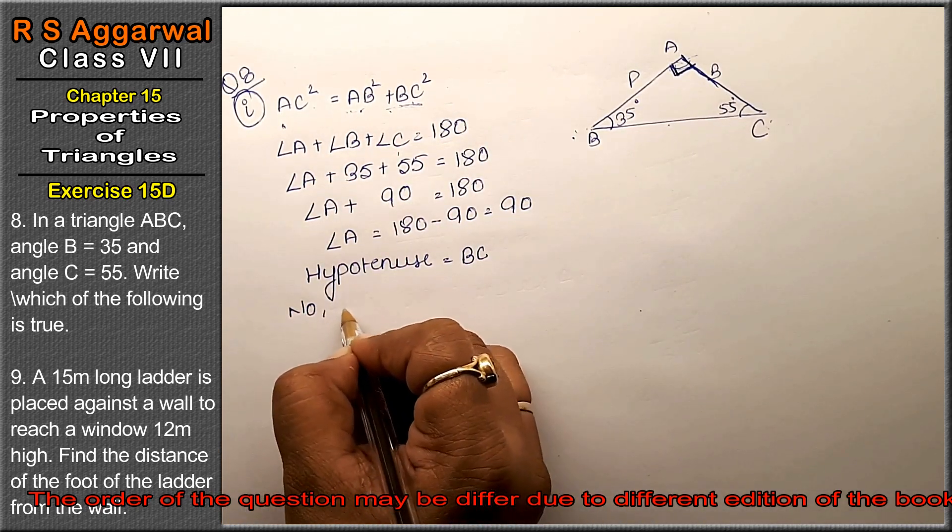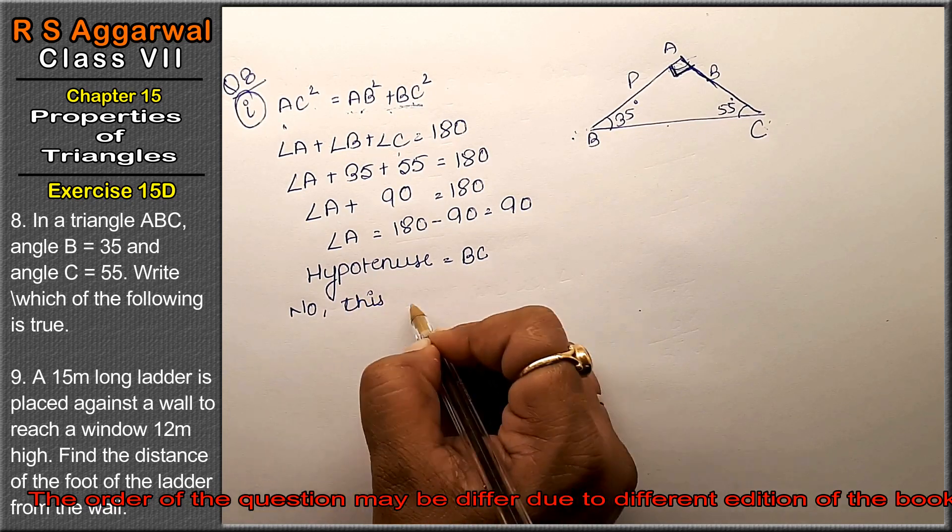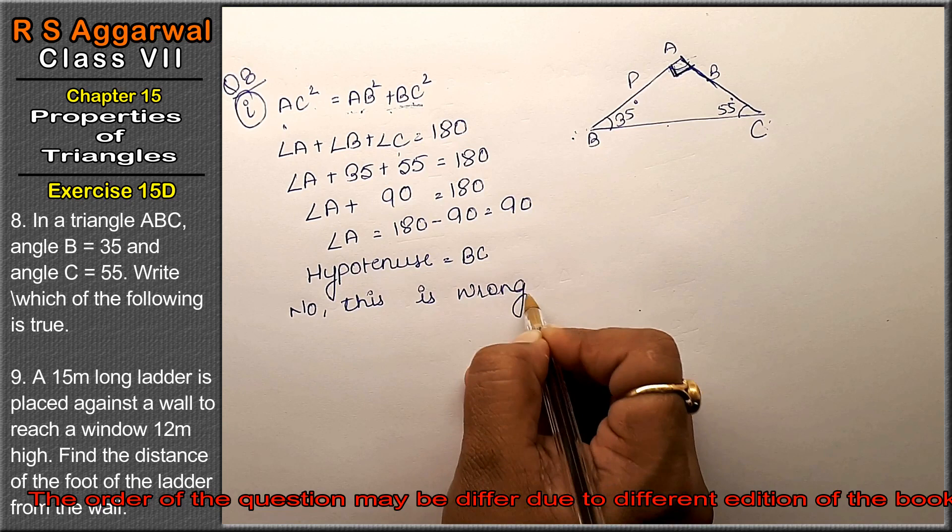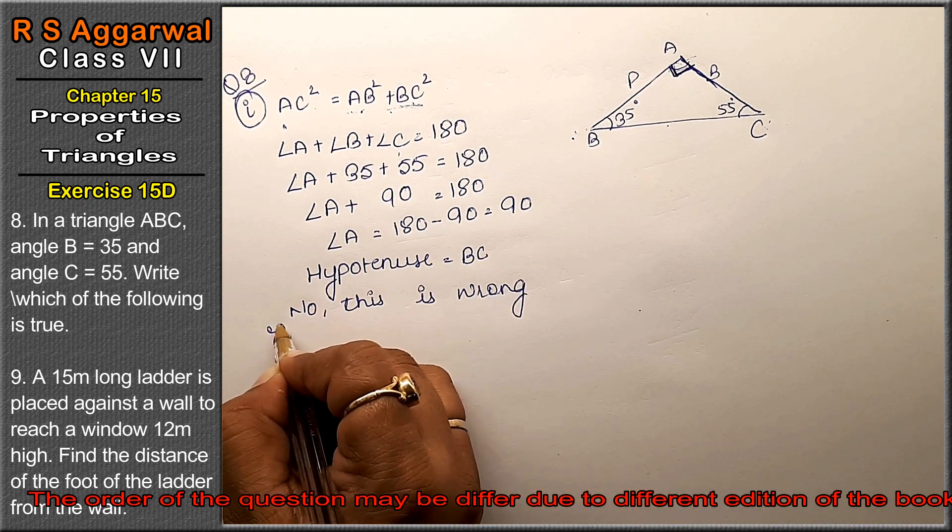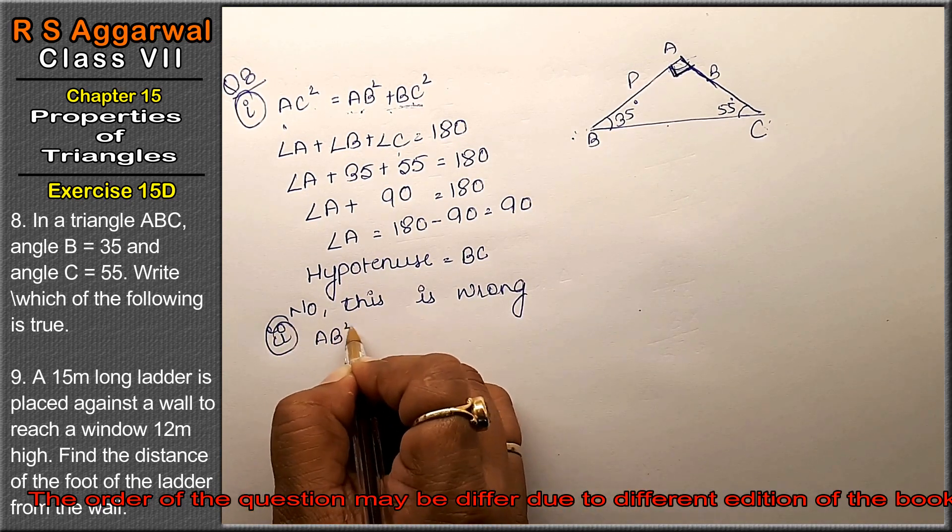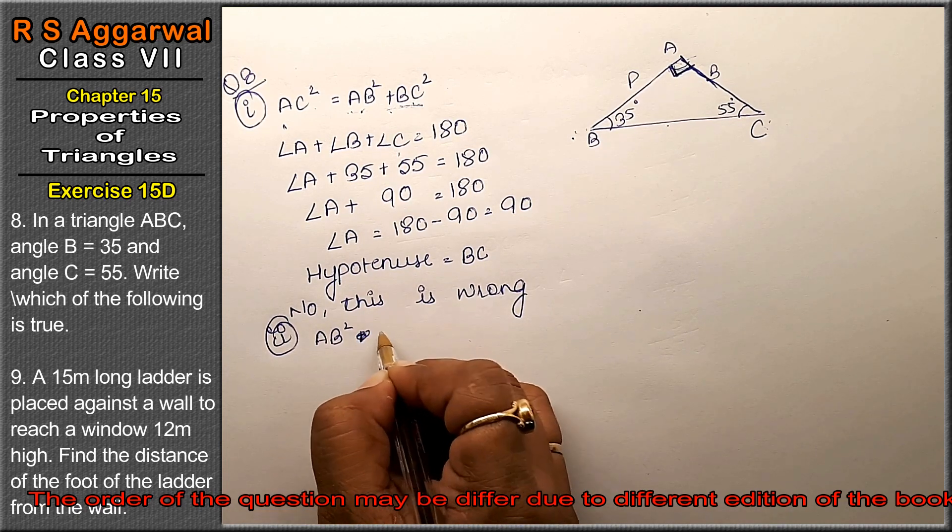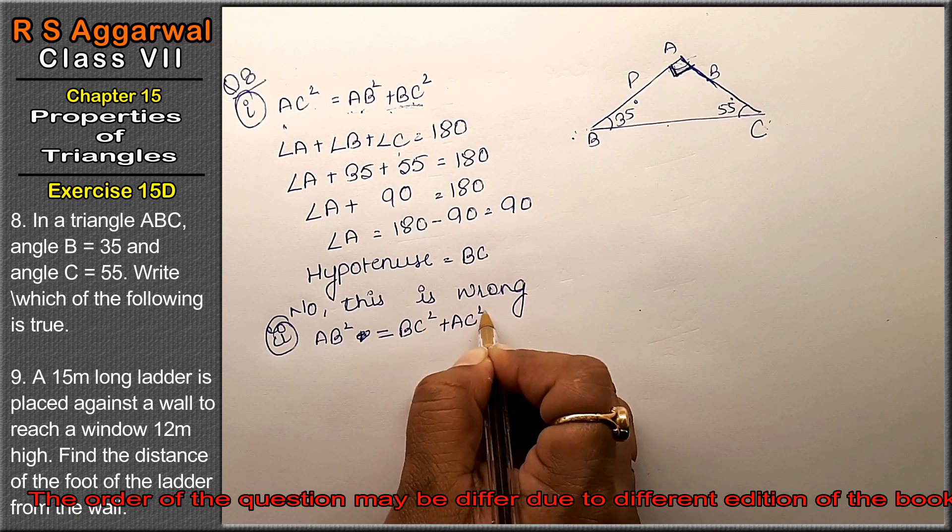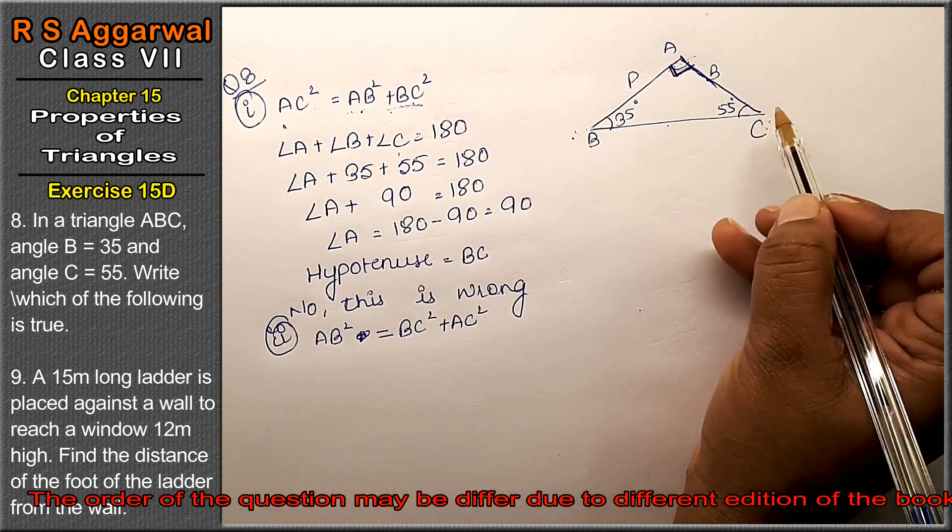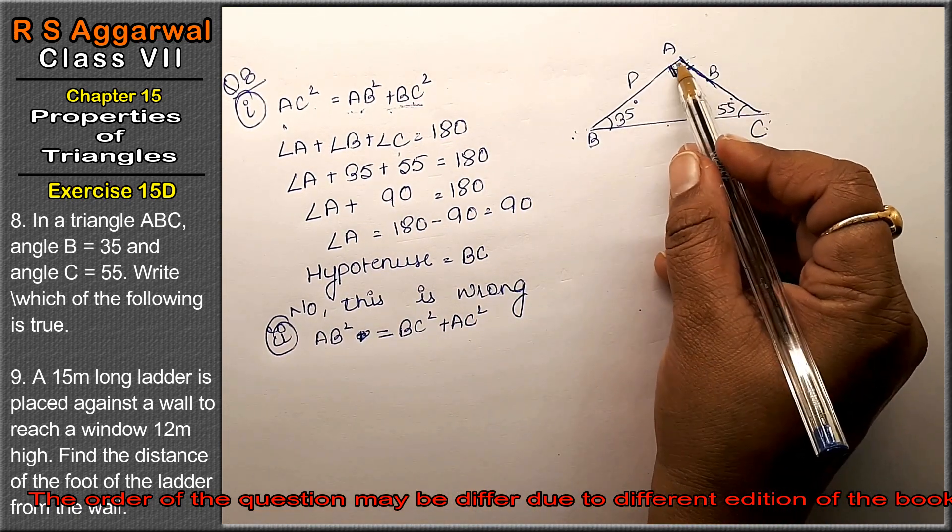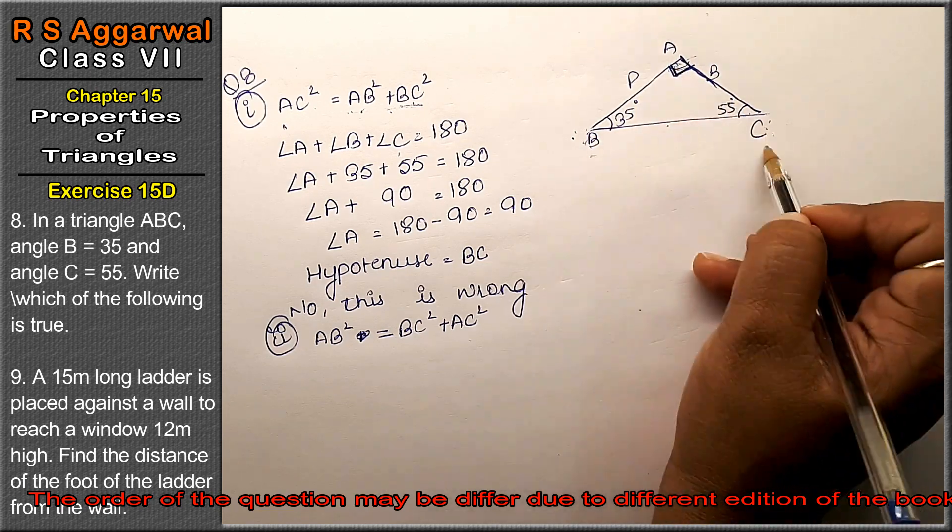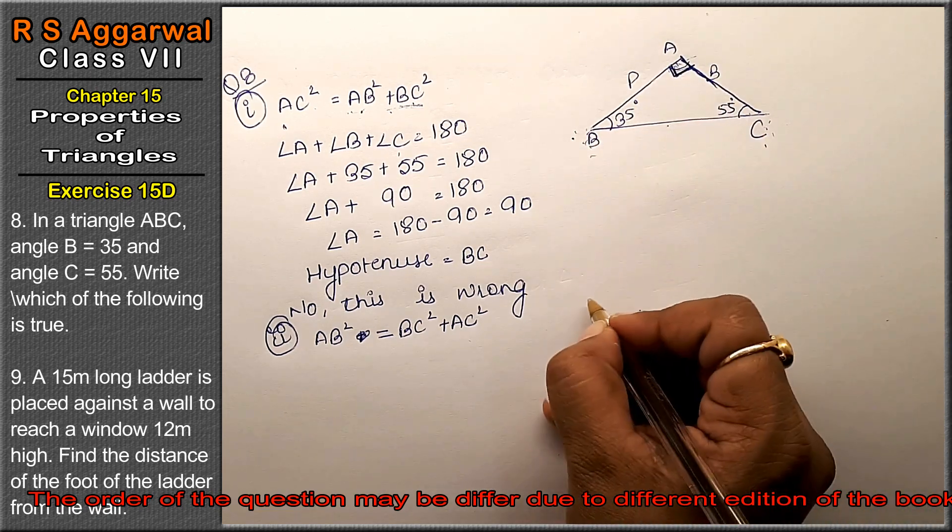This is wrong. Now what is the second part? AB² = BC² + AC². So BC² + AC² = AB². We have base plus perpendicular, then this is better. So hypotenuse is what?